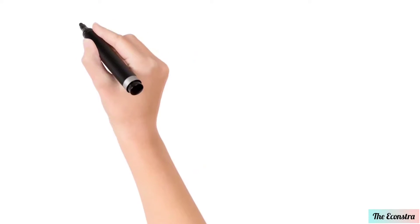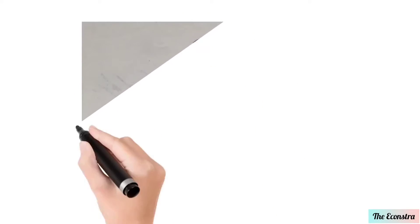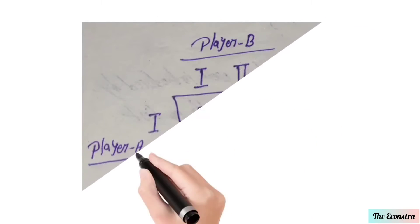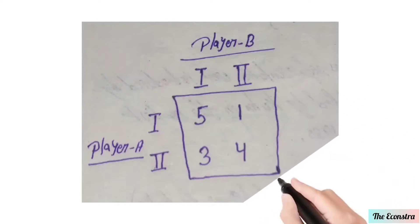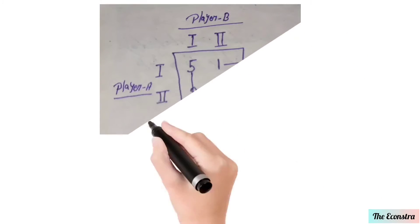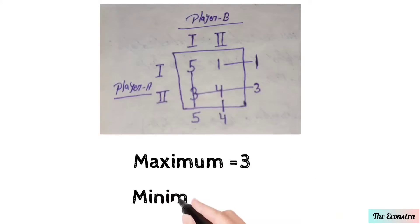In this mathematical equation, the chart is here. We observe that player A and player B, here the combination between both players are 5, 1, 3, 4. Here the calculation will be calculated like this. The maximum value is 3 and the minimum value is 4, and it is unequal.